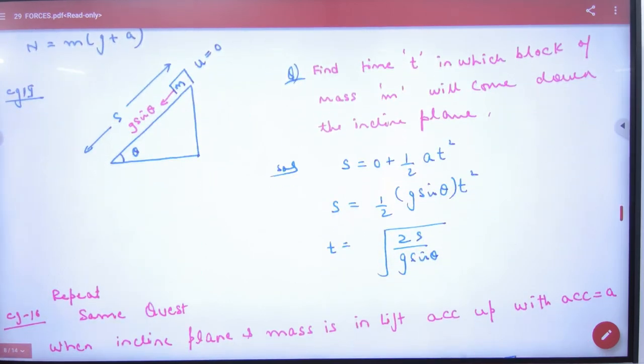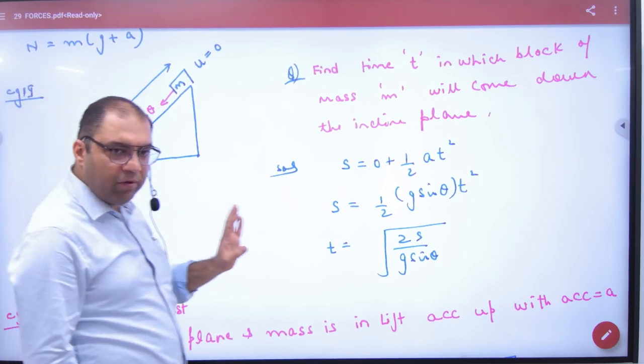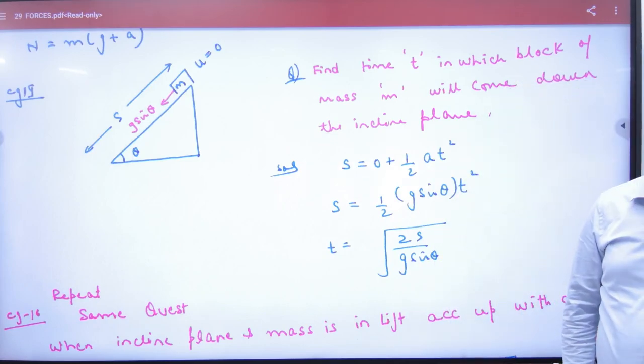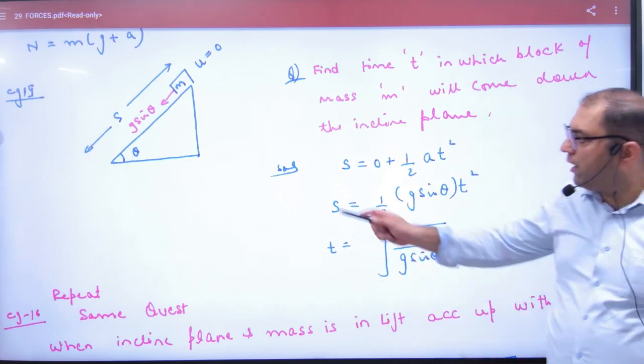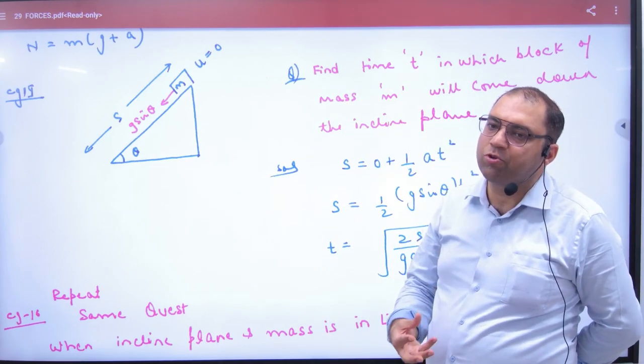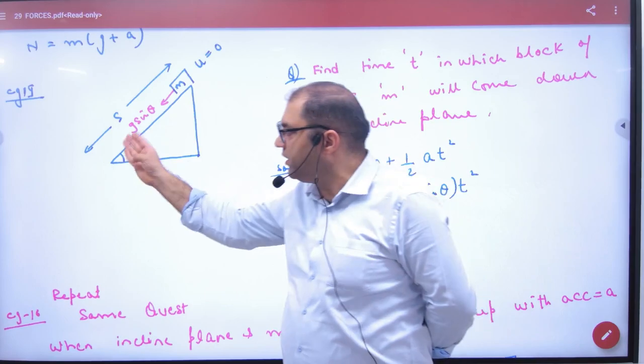Suppose you have an inclined plane. This type of problem comes. You have an inclined plane with angle theta. What is the mass of this object? M. And this is at rest. Rest means U is equal to 0. So imagine that this distance is S. If I ask, how many acceleration is this object coming down?